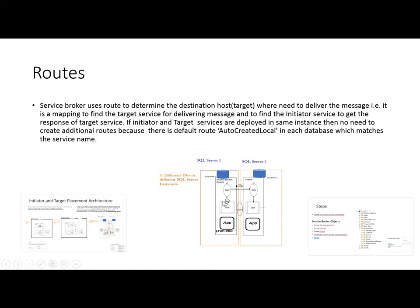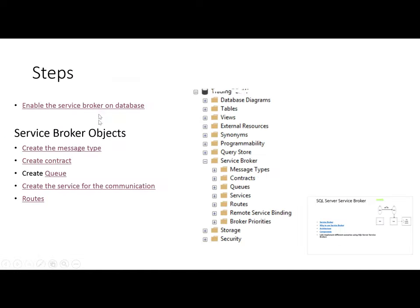In the routes we have to define the addresses of the physically deployed services, so when a service wants to communicate with another service it can find the address of that deployed service from the routing. In our case, we will deploy the services in the same database, so no need to define additional routing. These are the basic steps which are used to create a service-oriented application for asynchronous message delivery.